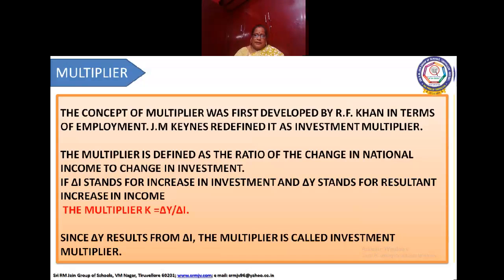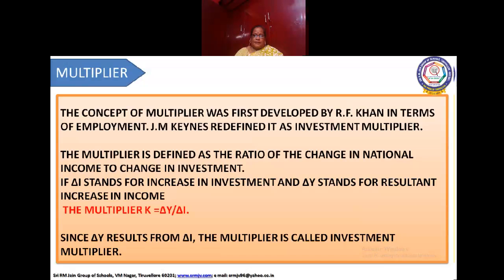What is Multiplier? Who developed the theory of Multiplier? What are the assumptions of Multiplier? Marginal Propensity to Consume and Multiplier. The Working of Multiplier. The two types of Multiplier — Positive and Negative. The Classification is also of two types: Static and Dynamic Multiplier. The Uses of Multiplier, the Leakages of Multiplier, and the kinds of Multiplier.